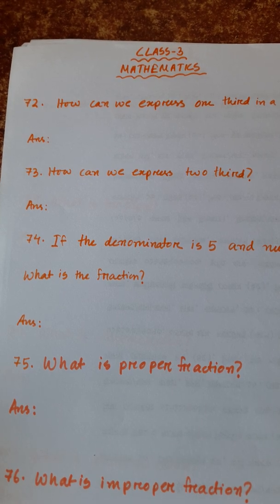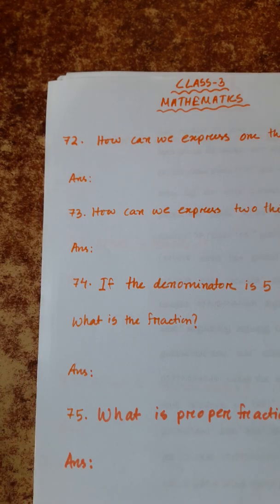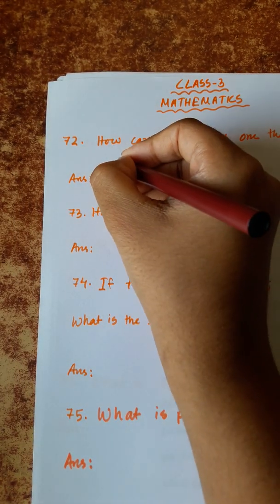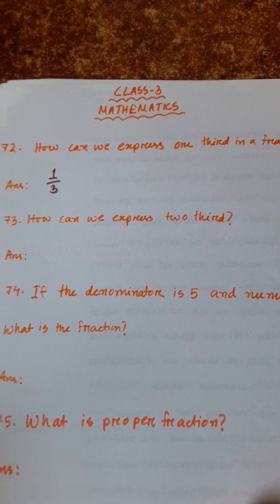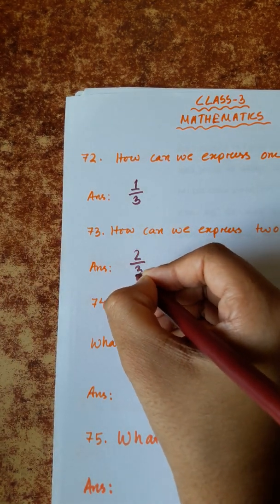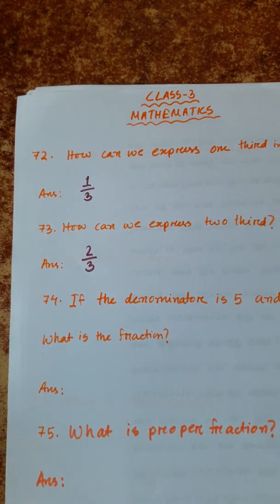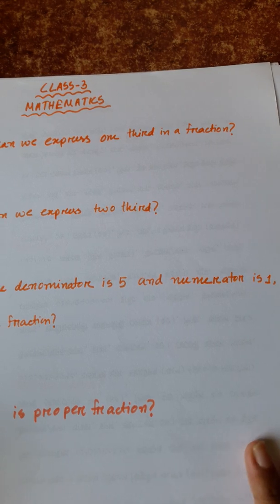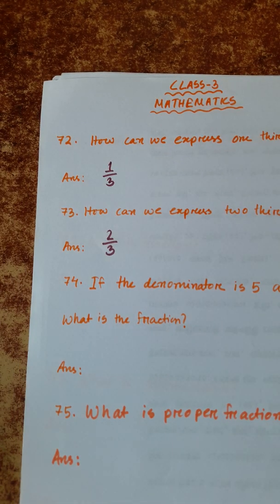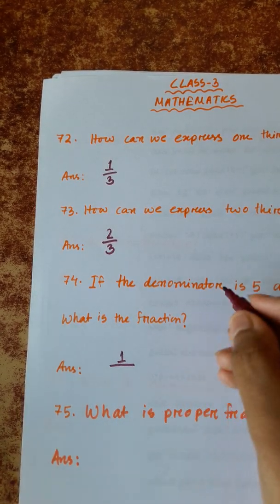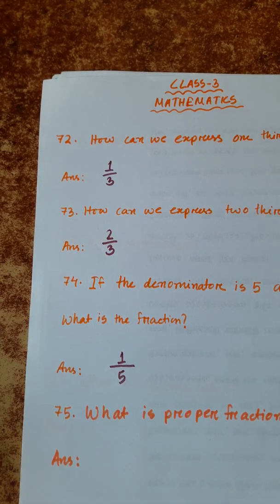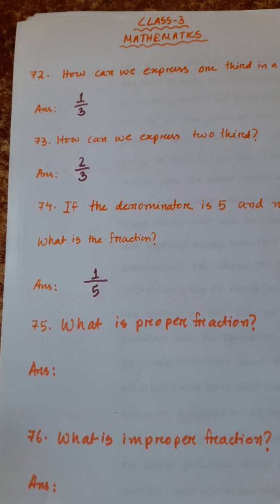Number 72: how can we express 1 third as a fraction? We can express 1 third like this. Number 73: how can you express 2 thirds? We can express 2 thirds like this. Number 74: if the denominator is 5 and the numerator is 1, what is the fraction? In a fraction, the upper number is called the numerator and the number below is called the denominator. So if numerator is 1 and denominator is 5, it is 1 fifth.